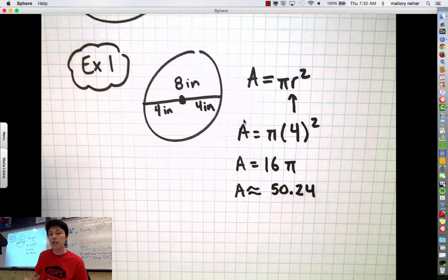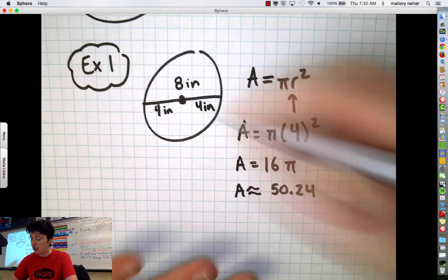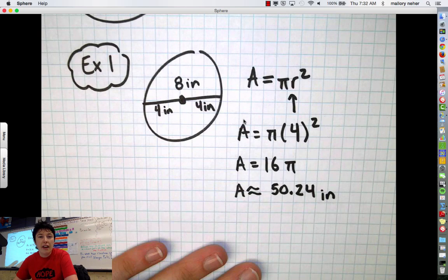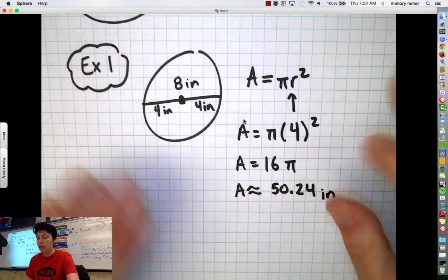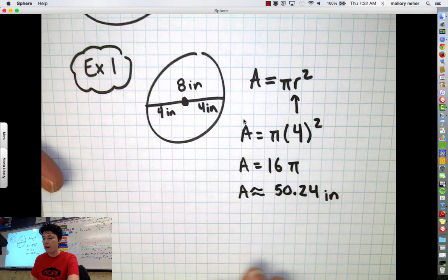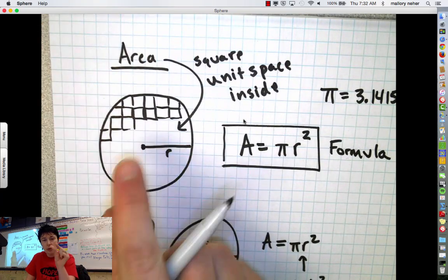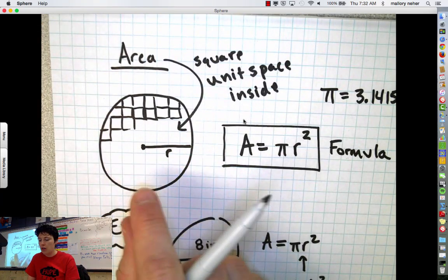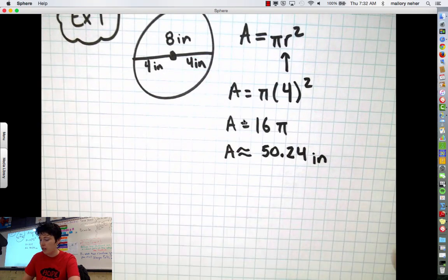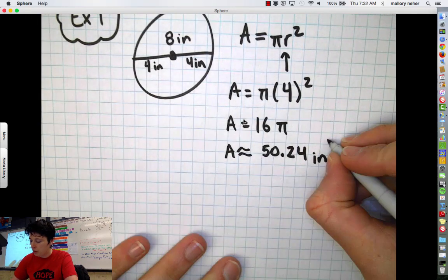And my units, I need units in this problem, were measured in inches. But this is area, so remember how area works. What we just calculated is that there are about 50 squares of inches, inch squares that fit inside this circle. So when we do our units, that's how we write our units, that it's inches squared.